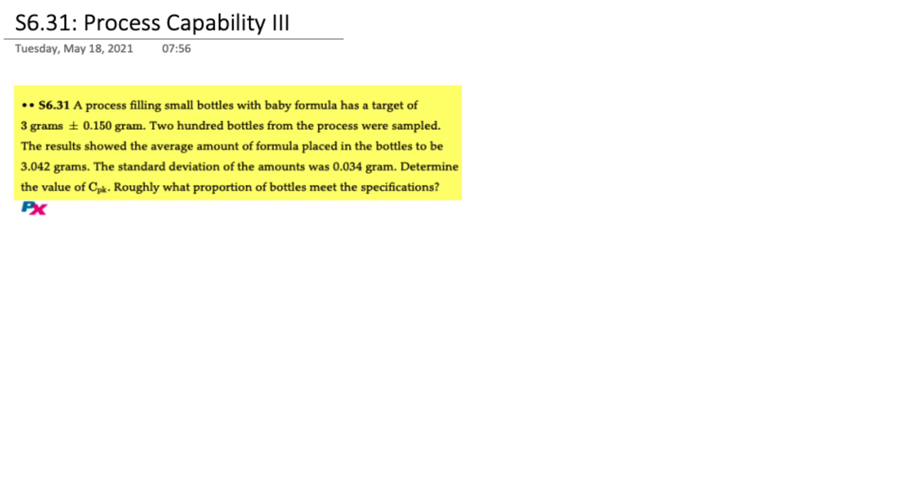We're asked to determine the CPK and then what proportion of bottles meet specifications. From the data we can determine that the upper specification limit equals 3 plus 0.150 grams which equals 3.150 and the lower specification is 3 minus 0.15 or 2.850. We can also pull out the standard deviation of 0.034 which we'll need later.